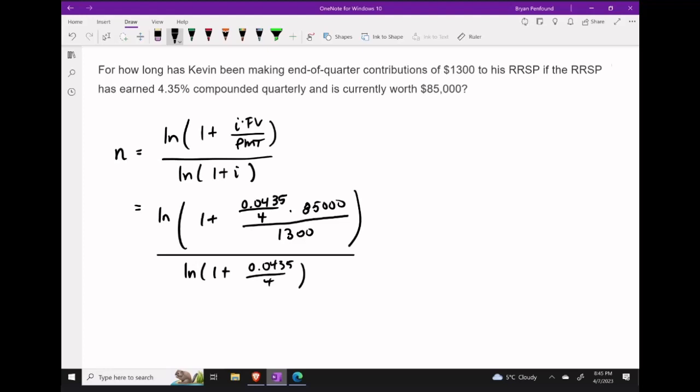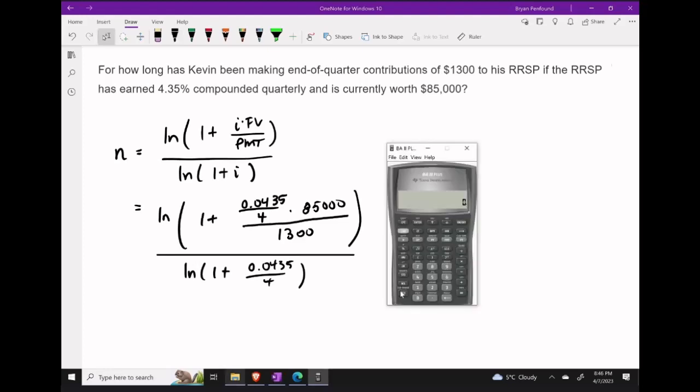Of course that's also going to be in the denominator of our fraction. So we're going to begin inside of the brackets in our numerator with our 1 plus .0435 divided by 4 times our FV of 85,000 and then divide by 1,300.